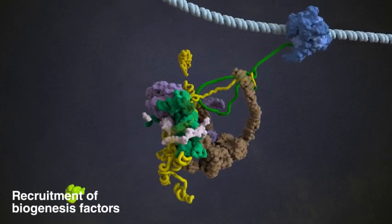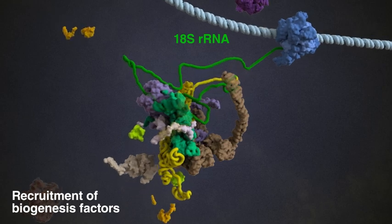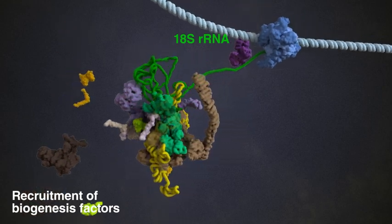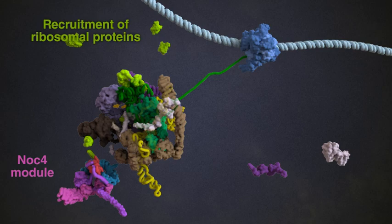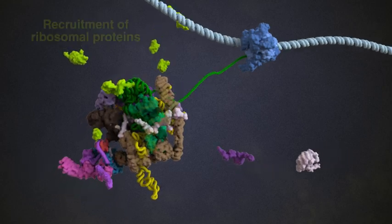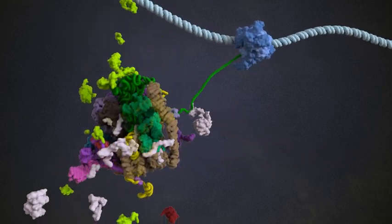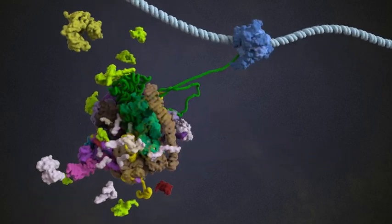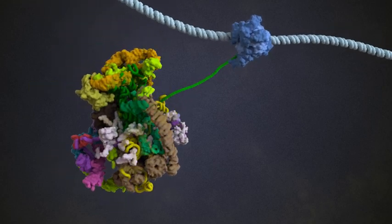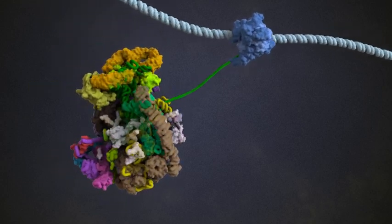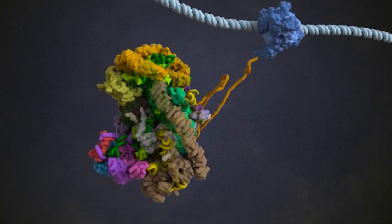Subsequently, up to 70 different additional biogenesis factors, also called 90S factors, and many ribosomal proteins are recruited to form the entire 90S pre-ribosome. Overall, this myriad of assembly factors forms a mold or scaffold, which facilitates the modification, folding, and three-dimensional arrangement of the pre-ribosomal RNA.